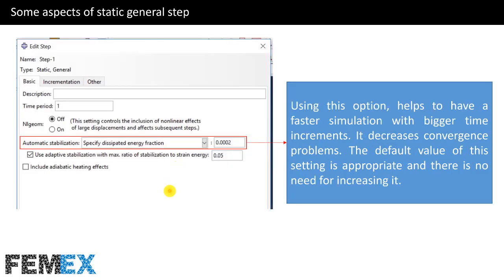Now, I want to talk about this setting. Using this option helps to have a faster simulation with bigger time increments. It decreases convergence problems. The default value of this setting is appropriate and there is no need for increasing it. The use of this setting in highly non-linear problems is very, very important and it helps you to have a faster simulation and have a simulation with less convergence problems.